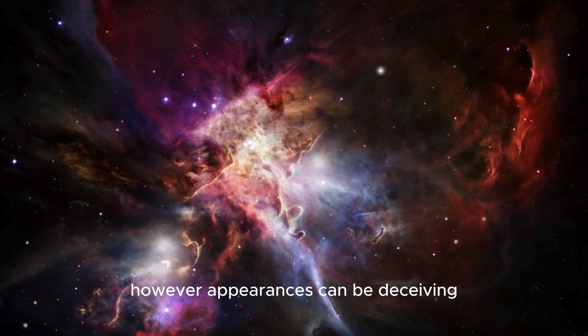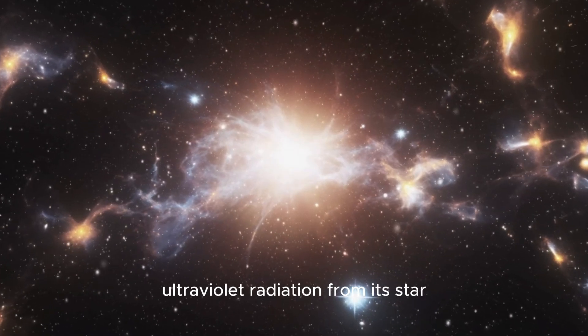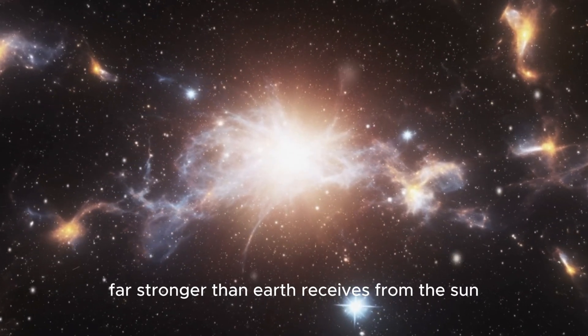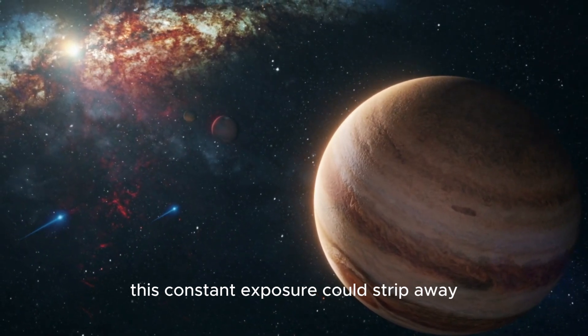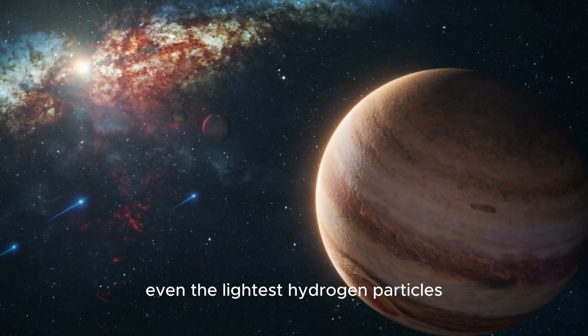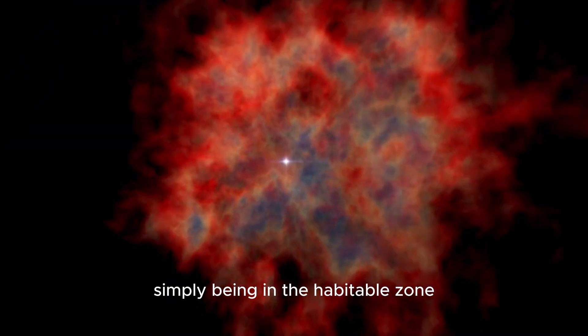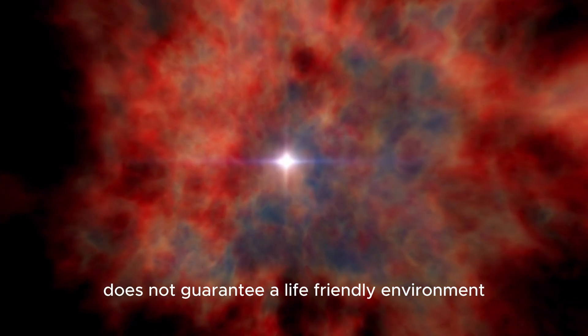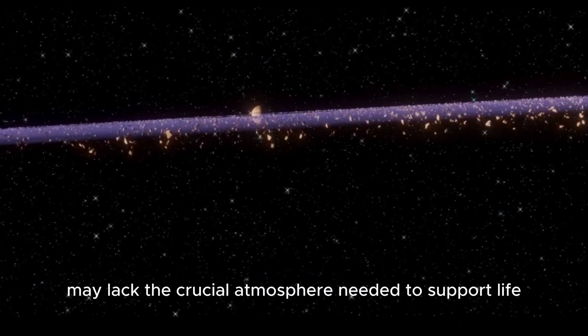Proxima b is bombarded by intense ultraviolet radiation from its star, far stronger than Earth receives from the Sun. This constant exposure could strip away even the lightest hydrogen particles, putting essential gases like nitrogen and oxygen at risk. Simply being in the habitable zone does not guarantee a life-friendly environment.